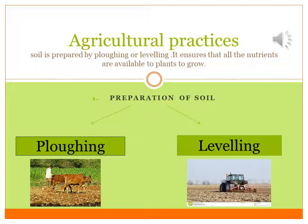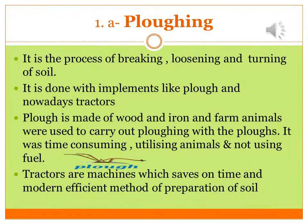To raise a crop, first of all we need to prepare the field. The very first step of agriculture practices is preparation of the soil, where we do two things: plowing and levelling. Plowing is the process of breaking, loosening, and turning of soil.